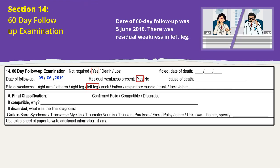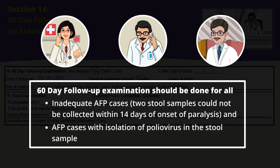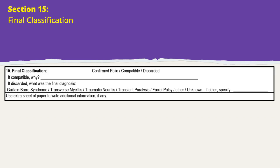The DIO, SMO, or nodal officer should conduct the 60-day follow-up examination for inadequate cases and poliovirus cases to see whether residual weakness is present. This is an inadequate case as the sample was collected after 14 days of onset of paralysis. Final classification is the last section of the CIF. An AFP case can be classified as confirmed polio, compatible, or discarded. Once discarded, the final diagnosis must be written in the CIF by the DIO or SMO at the earliest.